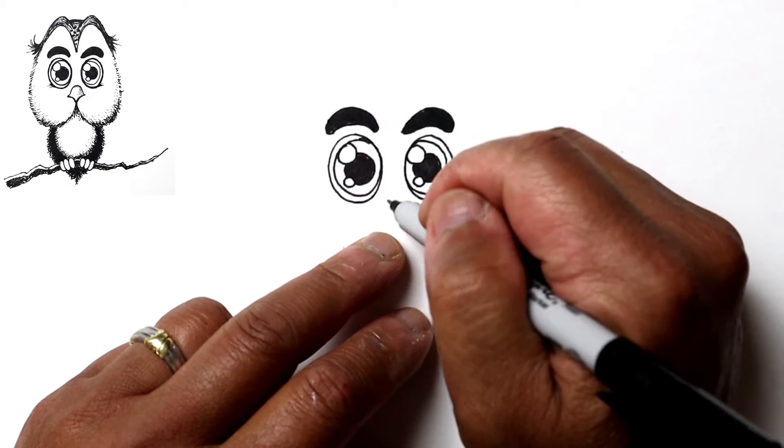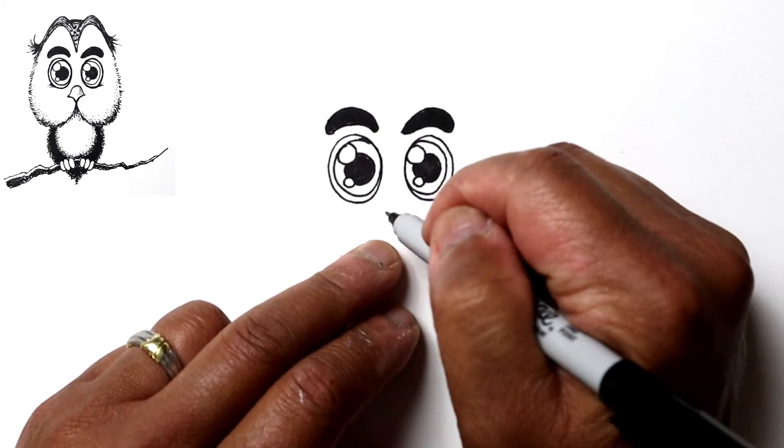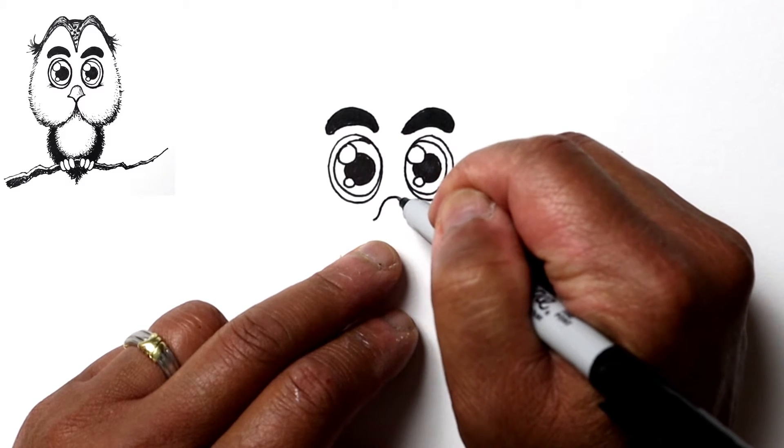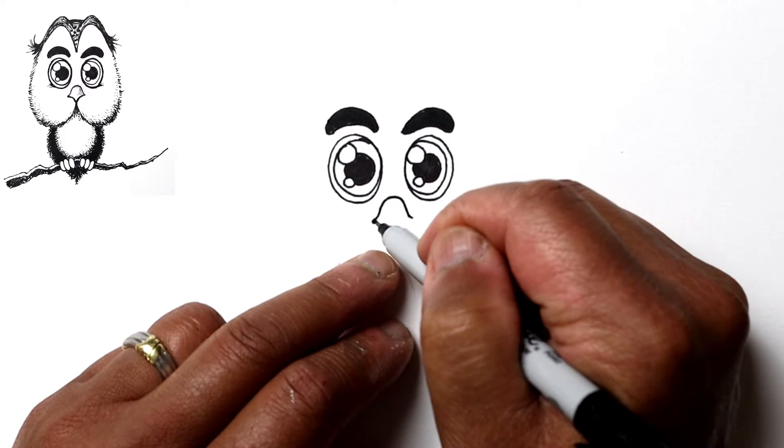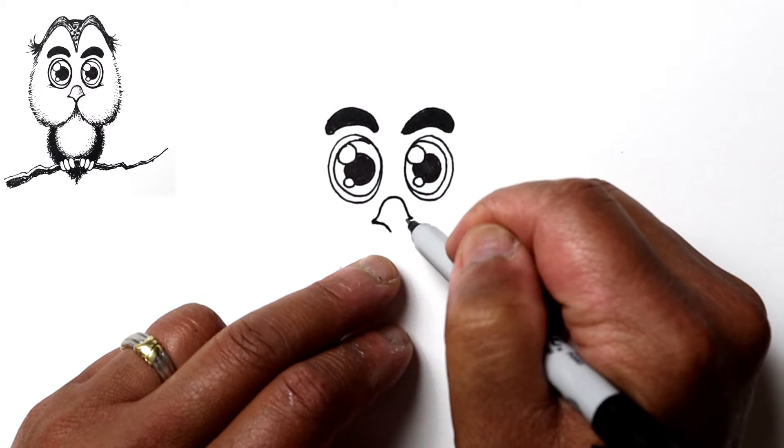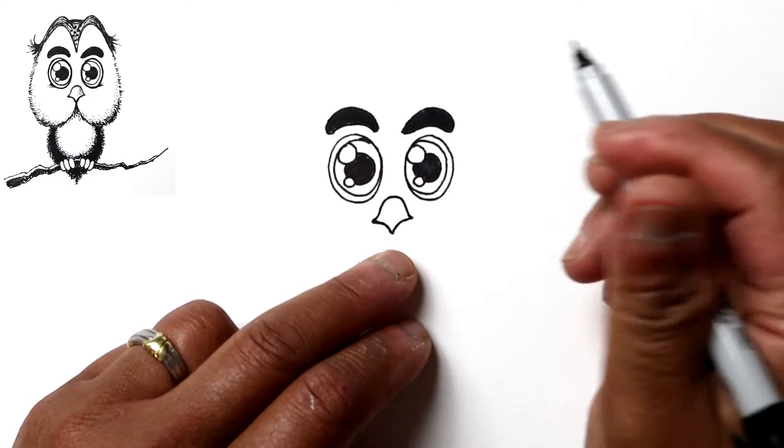So right here in the middle will be the beak, and we'll just draw a bell-shaped curve. And from the corners it's going to go towards the middle to a point, and that's it for that.